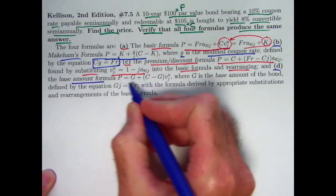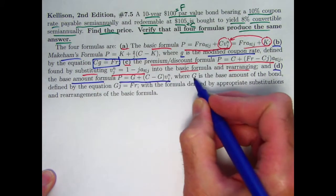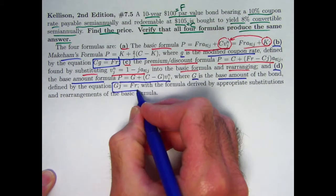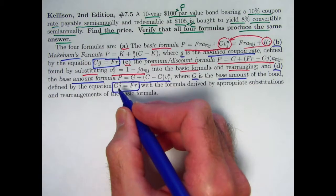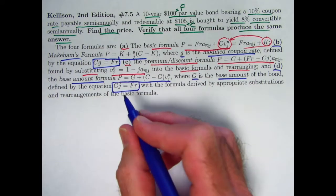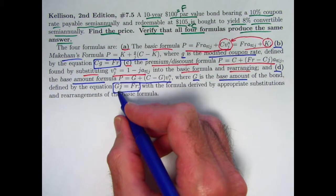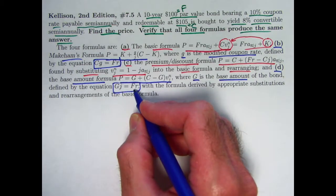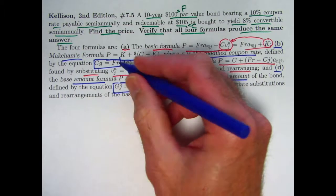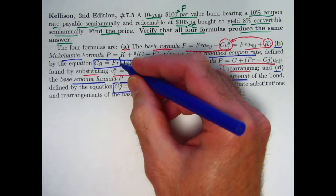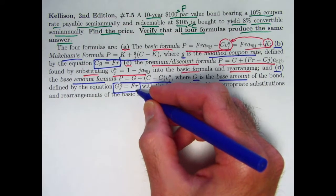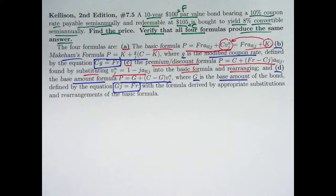And the fourth formula, D, is called the base amount formula. It looks like this. It introduces a new quantity, capital G, called the base amount. It's defined by this equation. So it would be an amount so that semi-annual interest payments at yield rate J, related to this base amount, G, give you the same as the coupon amounts. Of course, with these two equations, you can solve for little G and capital G. Little G would be FR divided by C. Capital G would be FR divided by J.